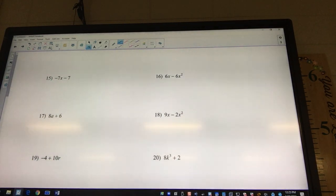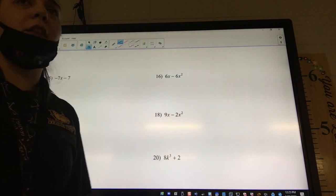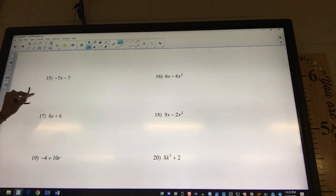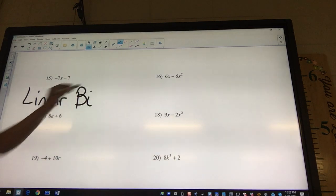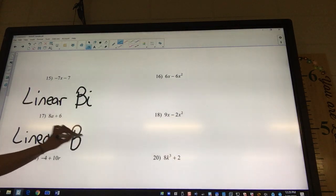So, what is the highest exponent? Negative 7x. It's a constant. So, we're going to name it. Hold on. It's linear. It's linear. And then how many pieces? Bi. Linear bi. Okay, is 18 in order? Yeah. Yeah, it is. Okay, so it's what? Linear. Linear. Bi.